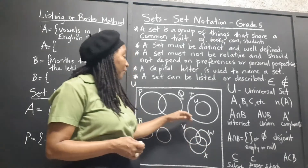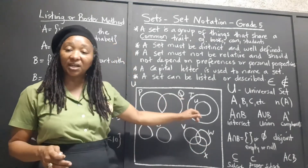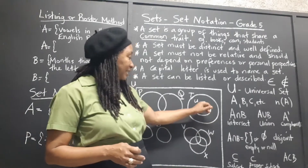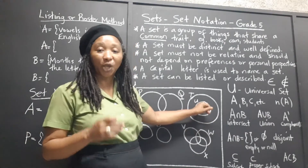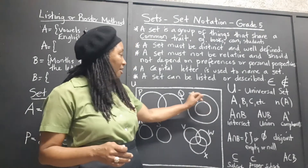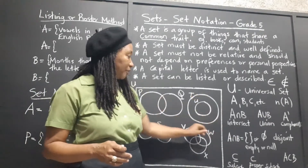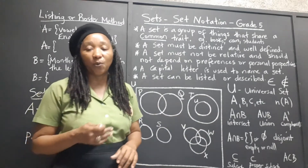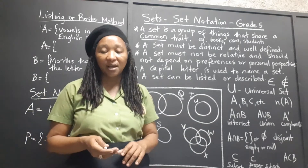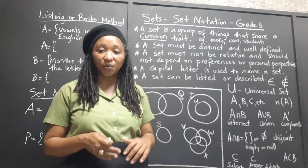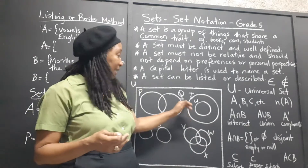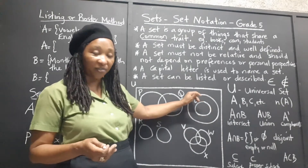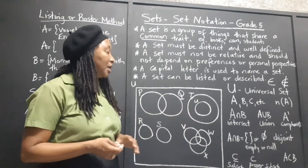Here we have a special case of intersection where this set is a subset of this one. Whenever the elements in one set are contained within another set, we say that this is a subset of the bigger group.